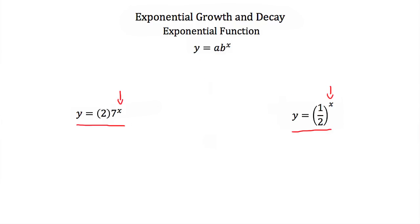Exponential functions have a standard form: y is equal to a times b to the x. Our b is our base and it's a constant. A is another constant that acts as a coefficient to the b to the x term. In our first example, 2 is our a and 7 is our b. In the second example, 1/2 is our b, and we can think of our a as just being 1.